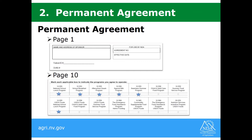Number two on the checklist for both NSLP and RCCIs is the Permanent Agreement. This form does cause some confusion, so I'm going to walk you through the necessary components. On page one, fill out your name and address of the sponsor, the federal ID, and your DUNS number. Then skip all the way to page 10, where you'll be presented with a chart. On the first row, check any program applicable to your sites: National School Lunch, School Breakfast, After School Snacks, Special Milk, or Seamless Summer.